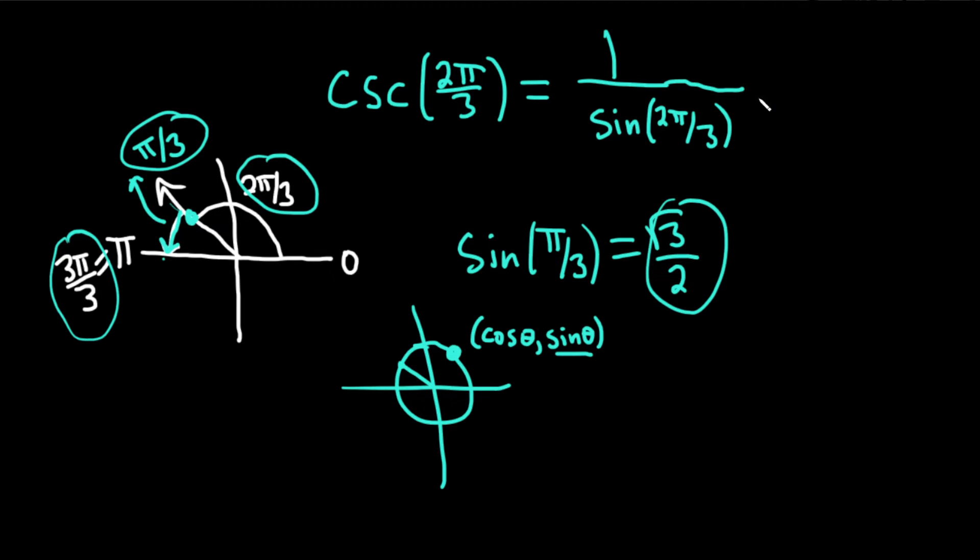When you plug that back into your formula, you end up with 1 over the square root of 3 over 2. But that's really 1 times the reciprocal of that, so 2 over root 3, which is just 2 over the square root of 3. So that would be the answer to the question, the cosecant of 2π over 3.